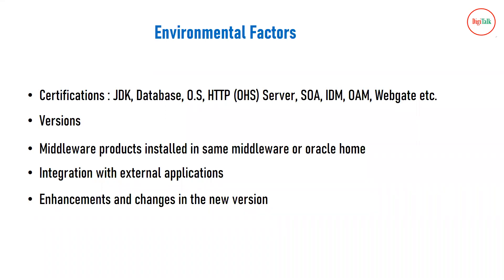Let us look at the environmental factors when upgrading middleware components. Some important factors — this is not a complete list — include certifications: JDK certification, database certification, OS certification, OHS server certification, and SOA, IDM, OAM depending on your components. Any middleware component requires a database, a JDK, and an operating system — Windows, Linux, or Unix — each with their own version.